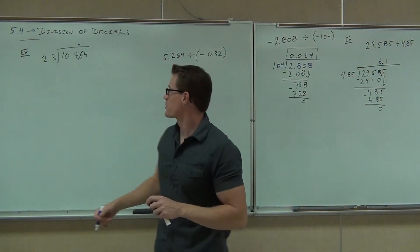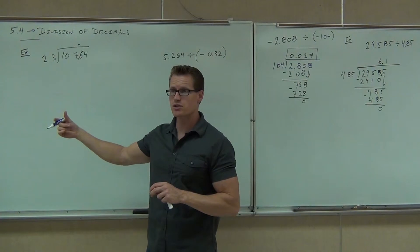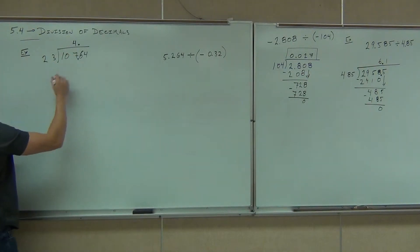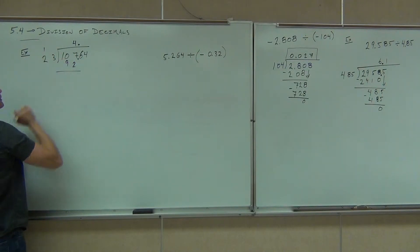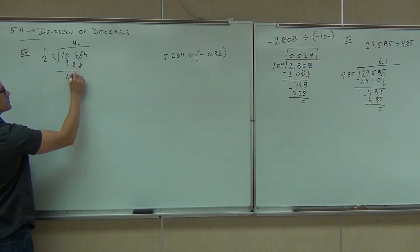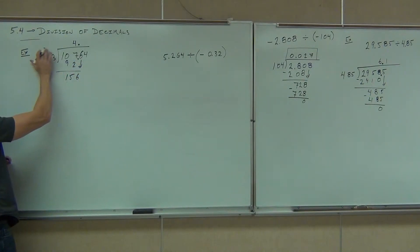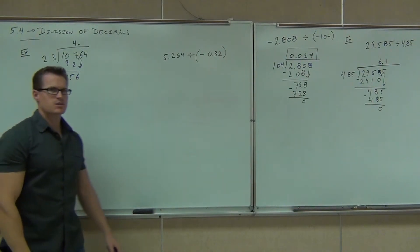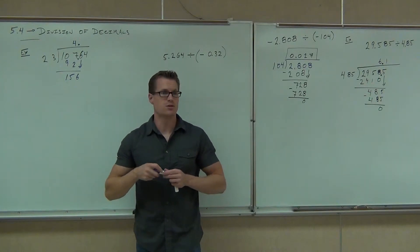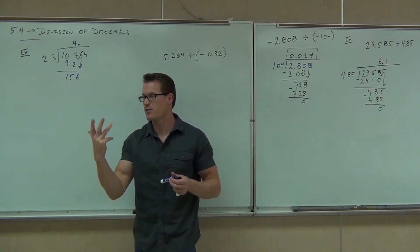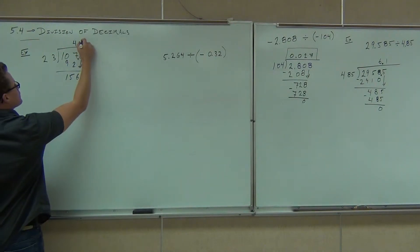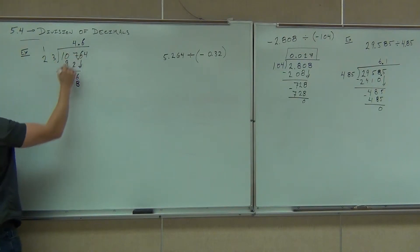Let's go ahead and divide together. 23 doesn't go into 1, doesn't go into 10, it goes into 107 — how many times? Four. That's a 12 with a 1 and a 9. How much is that? 15. We'll bring down the 6. How many times is 23 going to go into 56? Maybe you're estimating with 25: 25, 50, 75, 100, 125 — yeah, that's probably about six times. We'll get 18, we'll get 13.